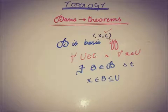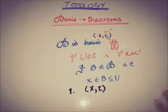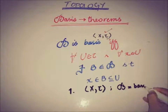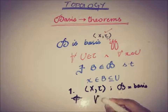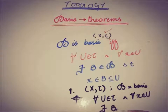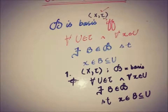This theorem is both necessary and sufficient, covering two angles. The first angle — necessity — is: given that (X, τ) is a topological space and B is a basis of topology τ, we prove that for all open sets U and for all x belonging to U, there exists a B from the basis such that x belongs to B and B is a subset of U.